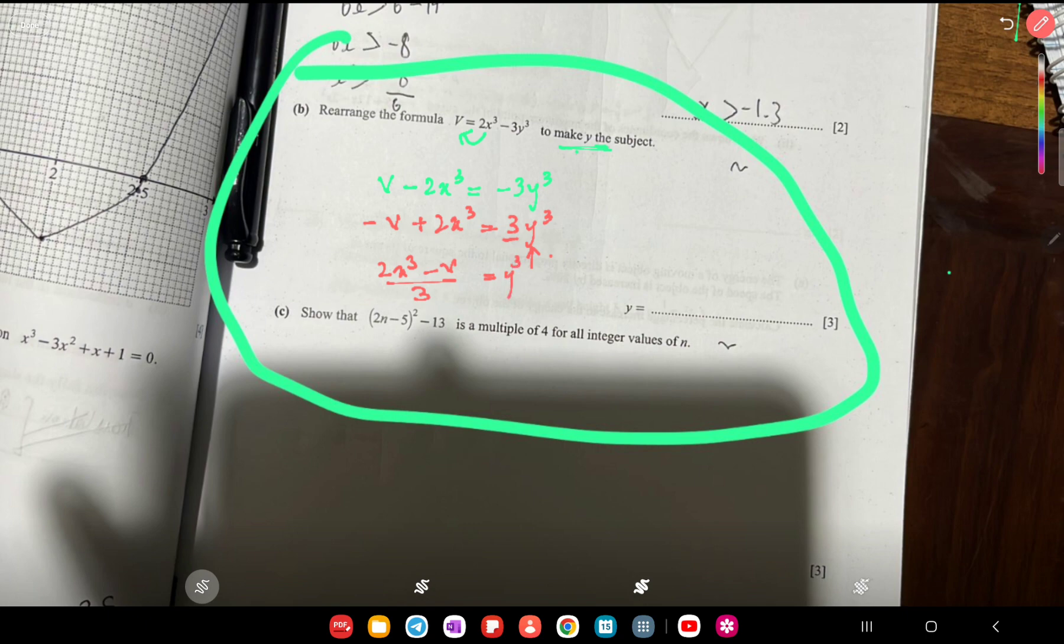Now taking cube root on both sides: ∛((2x³ - v)/3) = ∛(y³). The cube root cancels out with the cube.